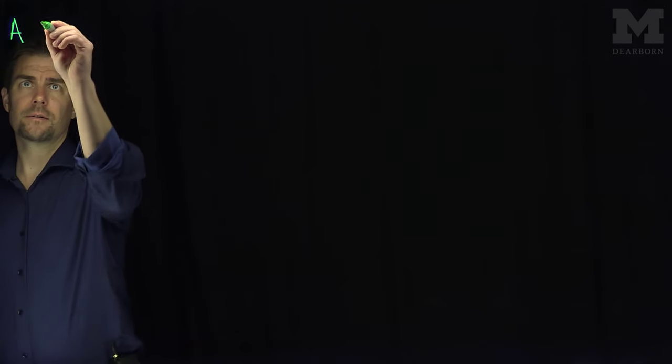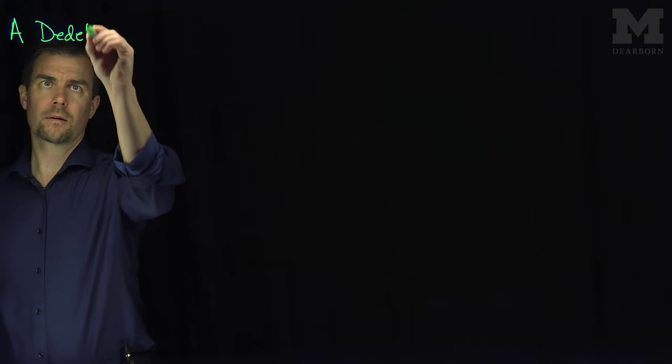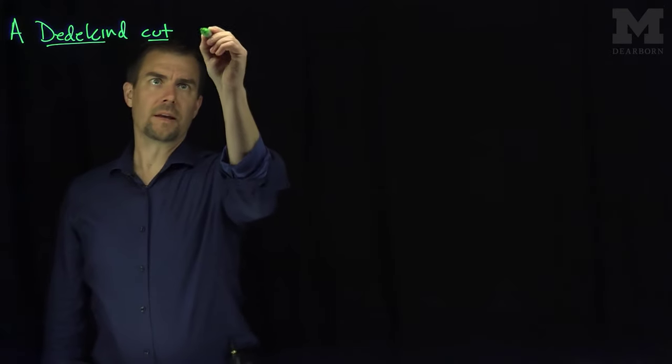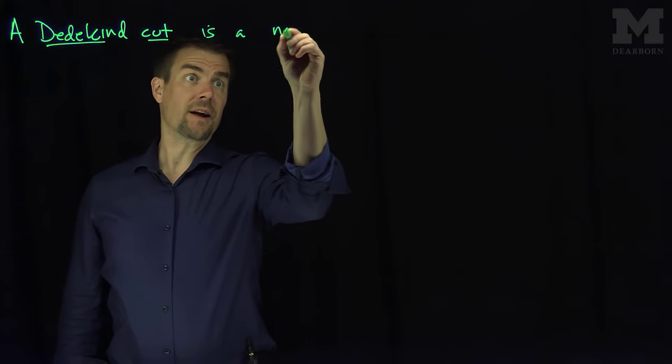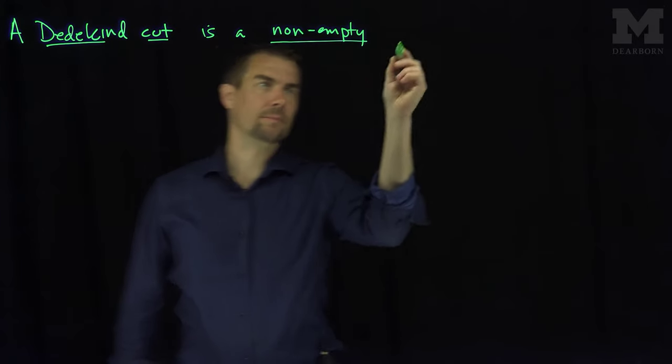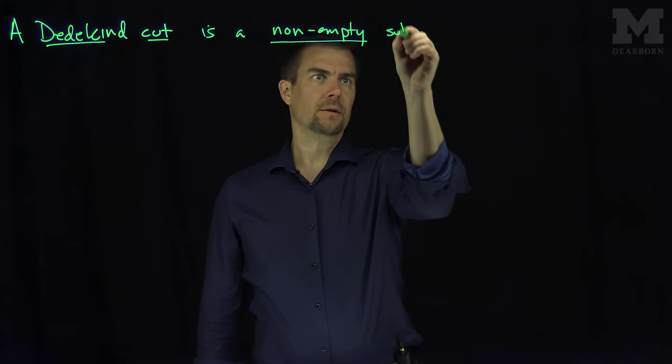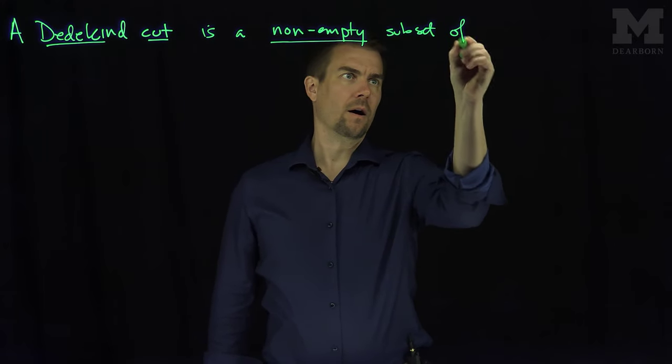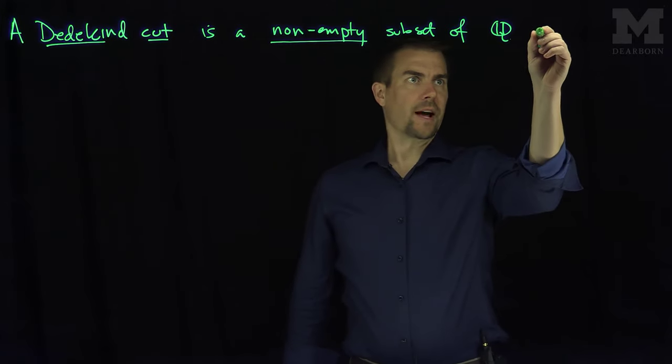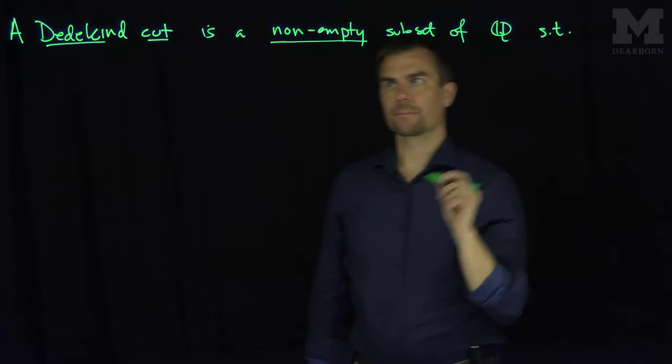A Dedekind Cut is a non-empty subset of the set of rational numbers Q such that three things are true.